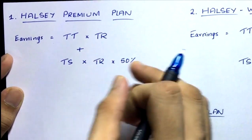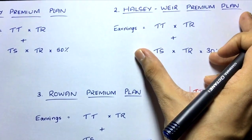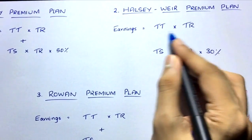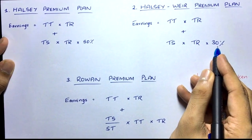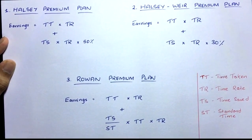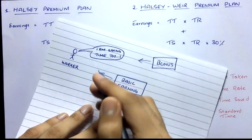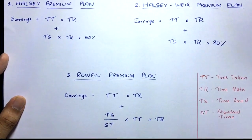In the Halsey Via Premium Plan, the formula is the same structure: Earnings = (Time Taken × Time Rate) + (Time Saved × Time Rate × 30%). The only difference between Halsey Premium and Halsey Via Premium is the bonus percentage — 50% versus 30%. The bonus is given because the worker is saving time.